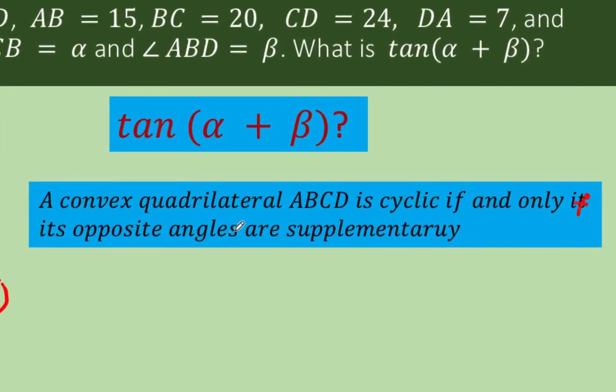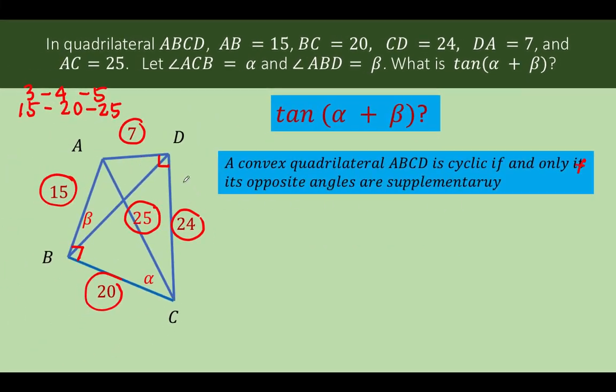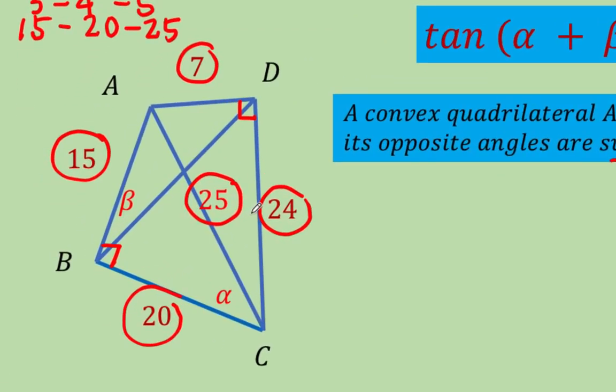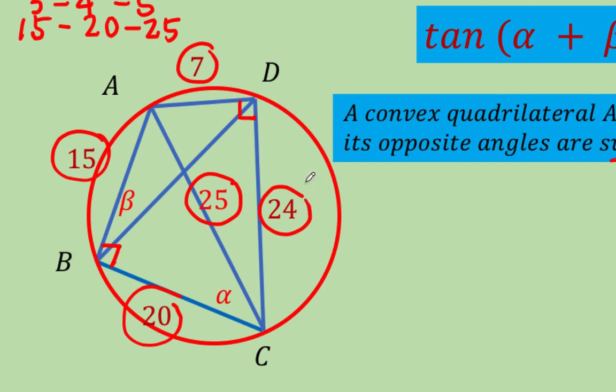When these two opposite angles of a quadrilateral are supplementary, 90 plus 90 is 180 degrees, then this quadrilateral is what we call a cyclic quadrilateral. A convex quadrilateral ABCD is cyclic if and only if its opposite angles are supplementary. Since we have proven that angle ADC is 90 degrees and angle ABC is 90 degrees, these opposite angles of the quadrilateral are indeed supplementary angles. Our conclusion is this quadrilateral is a cyclic quadrilateral. A cyclic quadrilateral is simply a quadrilateral that can be inscribed in a circle. Meaning vertices A, D, C, and B are all tangent to the circle. Not all quadrilaterals can be inscribed in a circle. When a quadrilateral can be inscribed in a circle, that quadrilateral is what we call a cyclic quadrilateral.